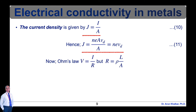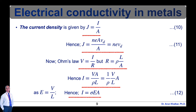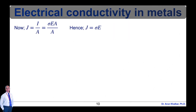From Ohm's law, V = I × R and R = ρ × L / A, so I = V × A / (ρ × L) = (1/ρ) × (V/L) × A. Since E = V/L, we can write I = σ × E × A — equation 12. Therefore, current density J = I / A = σ × E × A / A, giving J = σ × E — equation 13.